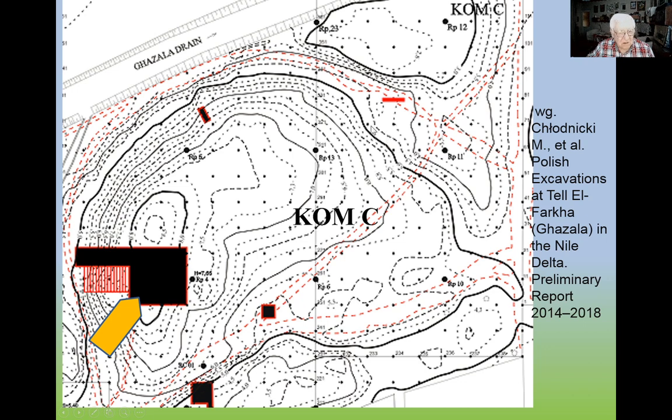There are three koms, three small hills with concentrations of archaeological finds: Kom C, Kom A, and Kom W.